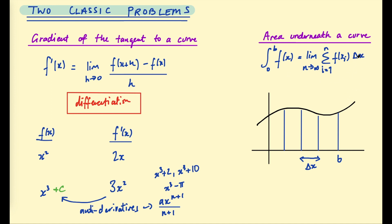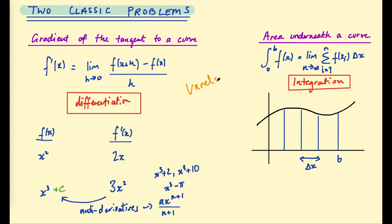We found the area under a curve using this method. It was very time consuming and clunky, but that's what we did — and this was integration. So we've looked at these two classic problems and discovered solutions. But so far, there is no reason to believe that these two things are related at all. Nothing tells us that the gradient of the tangent to a curve — the derivative — is related somehow to the integral, the area underneath the curve. But that's in fact what we're about to find out by looking at the fundamental theorem of calculus.